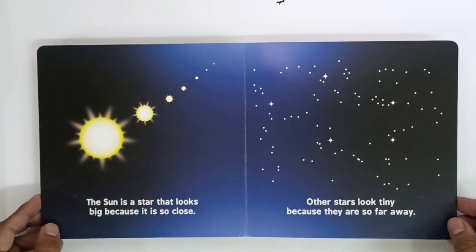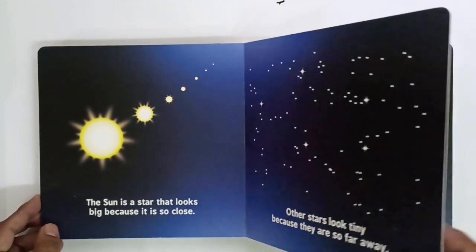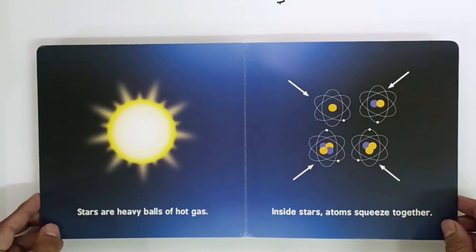The Earth orbits around the Sun. The Sun is a star that looks big because it is close. Other stars look tiny because they are so far away.